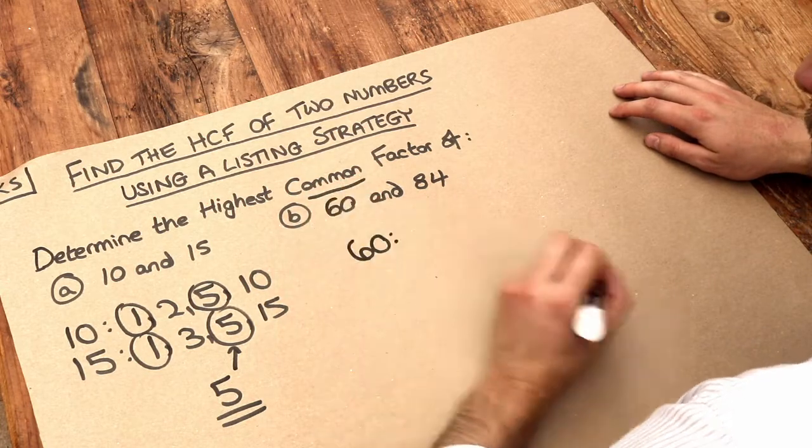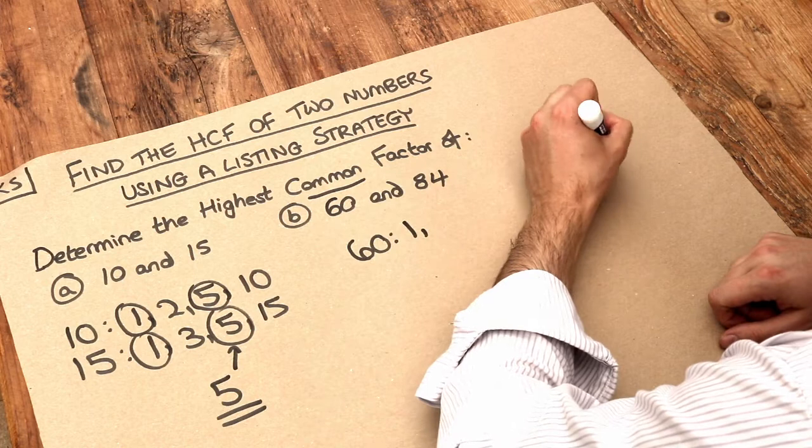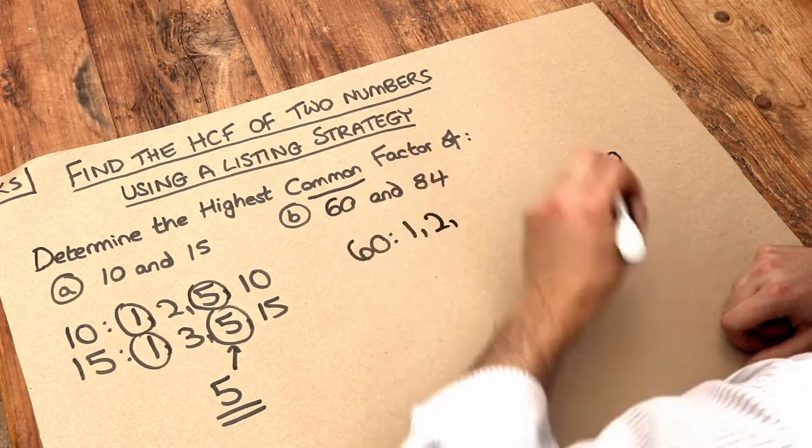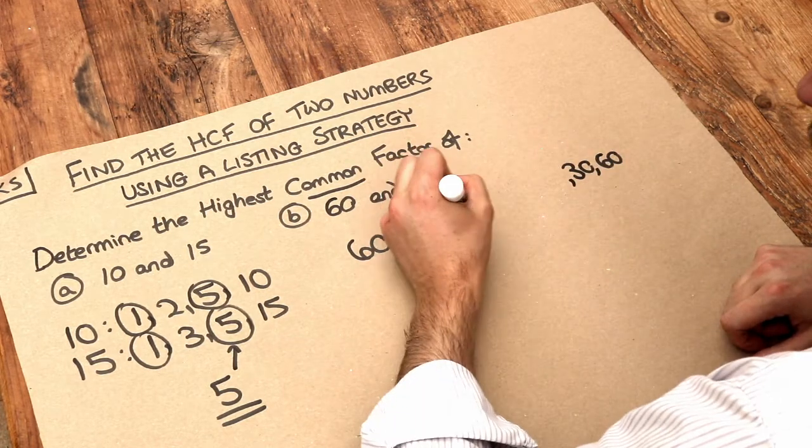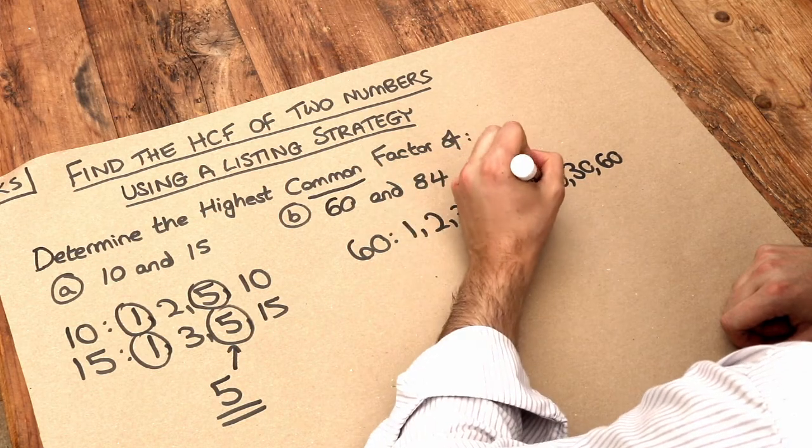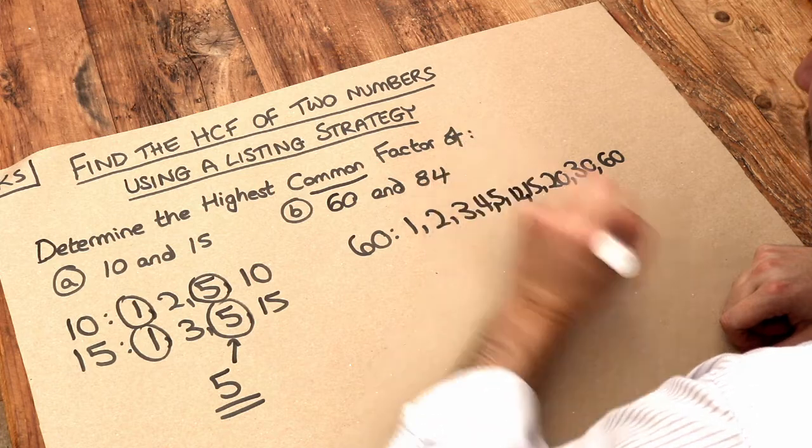Well, let's do the factors in pairs. So 1 times 60 gives you 60. 2 times 30 gives you 60. 3 times 20 gives you 60. 4 times 15 gives you 60. 5 times 12 gives you 60.